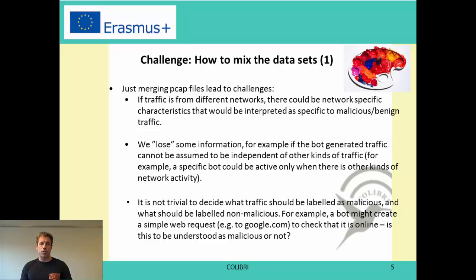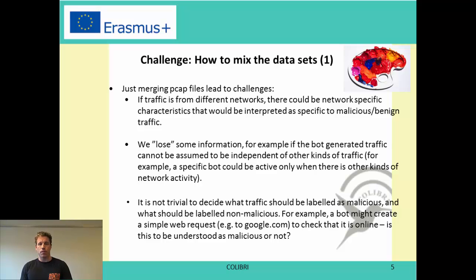Another challenge is deciding what traffic should be labeled as malicious versus non-malicious. For example, a bot can make a simple web request to Google to check it is online — this looks just like any other web request and could be considered benign because it is not harmful. But what if there are 2, 3, 100, or 10,000 such Google requests? We also need a clear definition of what is malicious: if everything created by malware is malicious, then a Google request would be labeled malicious, making it nearly impossible to distinguish malicious from non-malicious traffic.